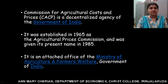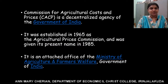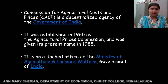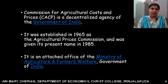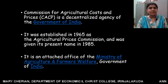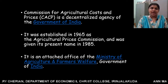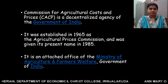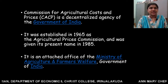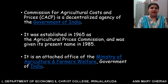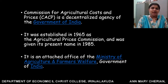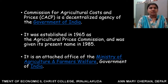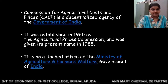Commission for Agricultural Costs and Prices is a decentralized agency of the Government of India. It is an attached office of the Ministry of Agriculture and Farmers Welfare, Government of India. It was established in 1965 as the Agricultural Price Commission and was given its present name in 1985.